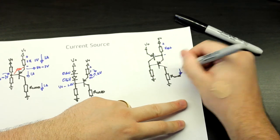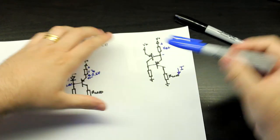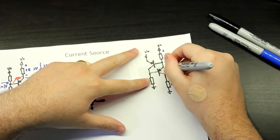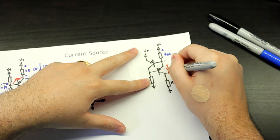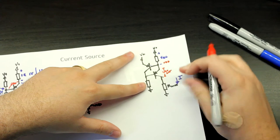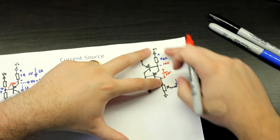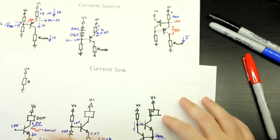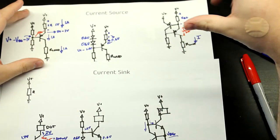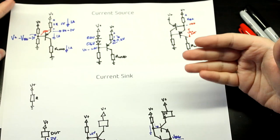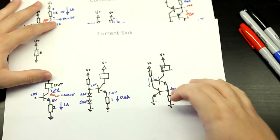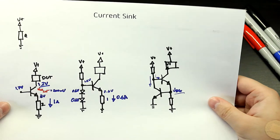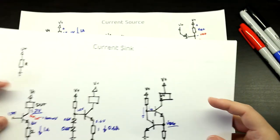No matter what happens at the load, you'll always get a constant current. The only thing to keep in mind is the VCE sat here, and this node will always be at VBE. The voltage here can never go above V+ minus this VBE minus VCE sat. Now you can both source and sink currents. You will always see the current source on the high side of something — feeding an amplifier stage — and the current sink on the low side, providing a constant current. Now let's combine these two designs, especially the current sink, with what we've seen before with the emitter follower.